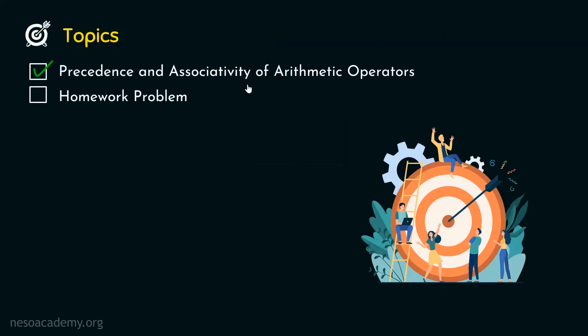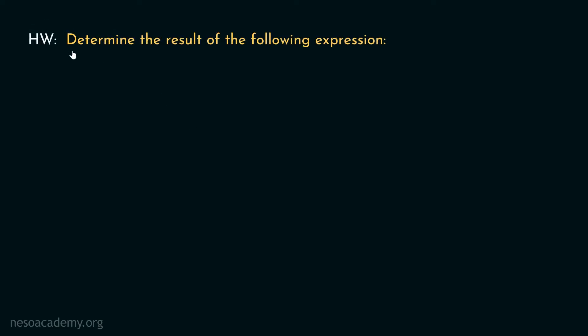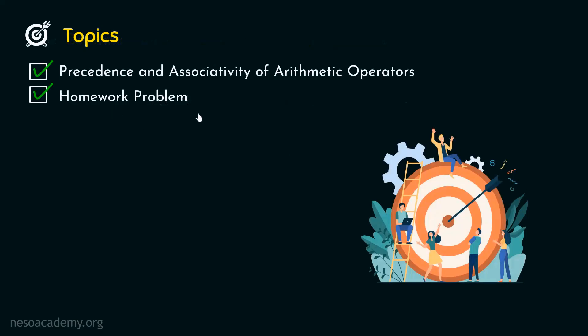We are done with precedence and associativity of arithmetic operators. Now, it is your turn — determine the result of the following expression, and post your answer in the comment section. We have seen the homework problem of this presentation and understood the precedence and associativity of different arithmetic operators. Thank you for watching this presentation. I will see you in the next one. Bye.